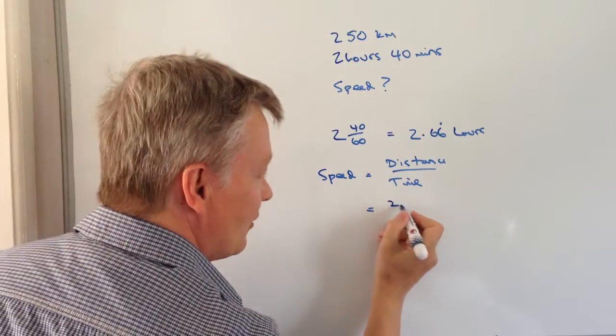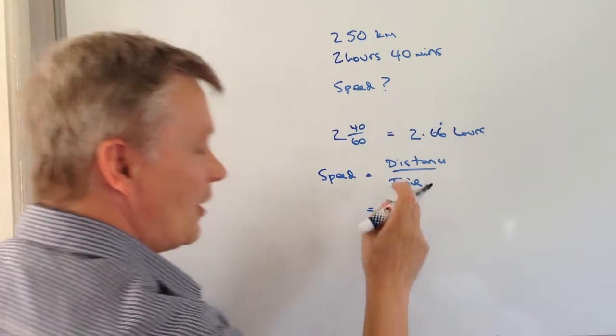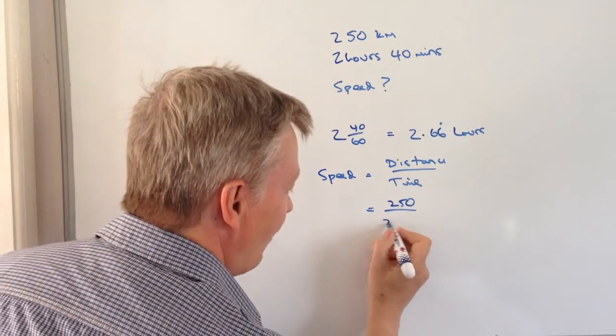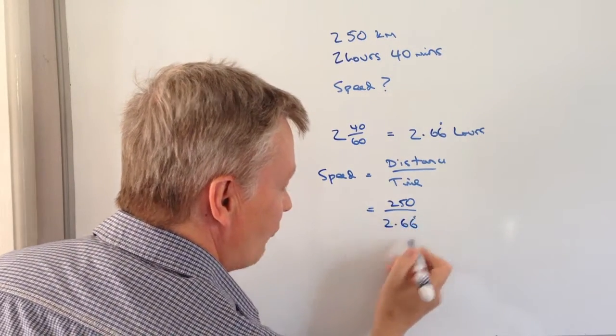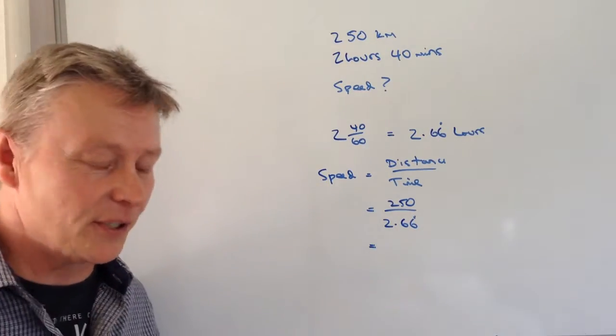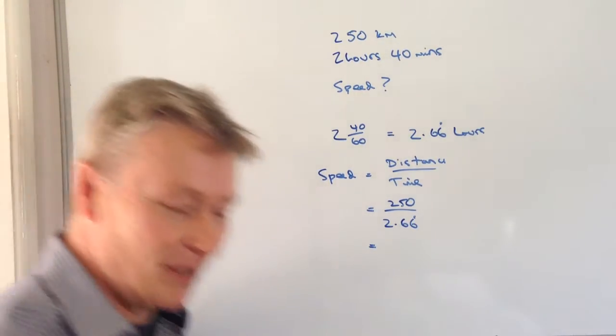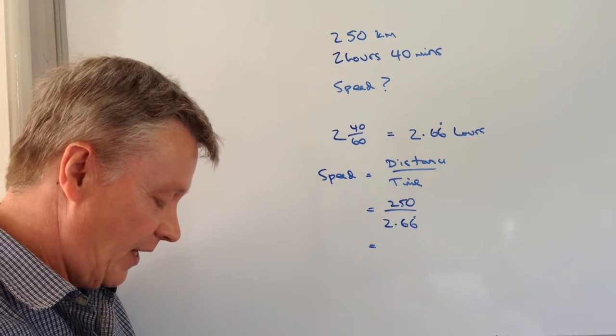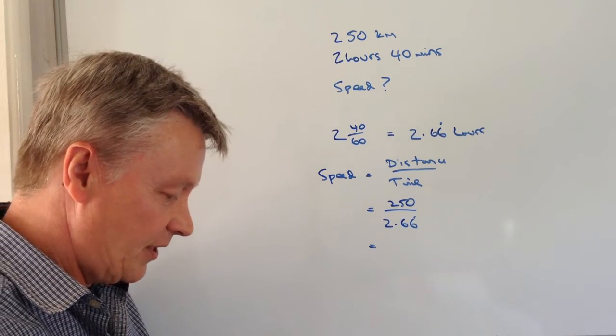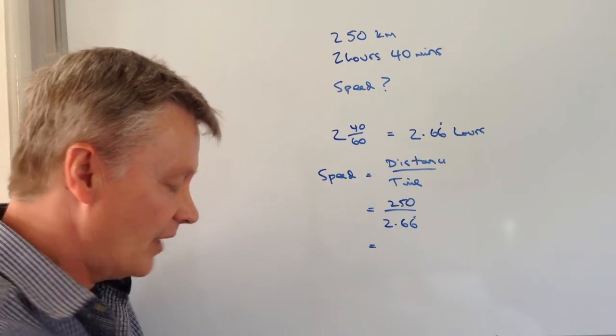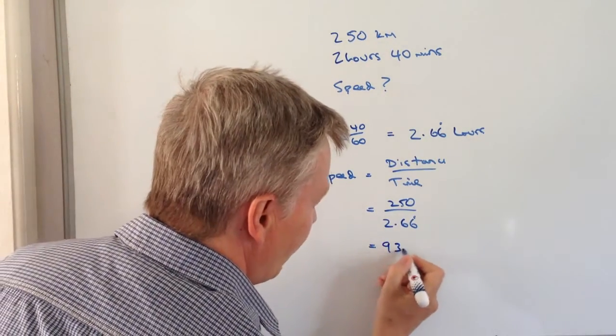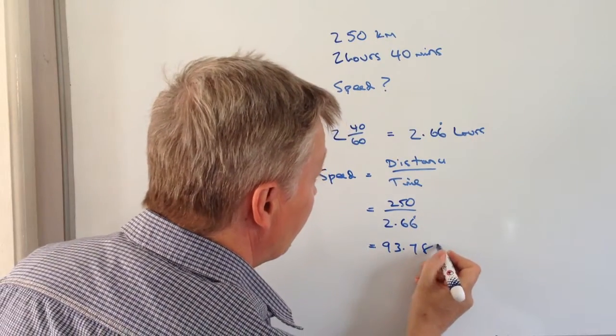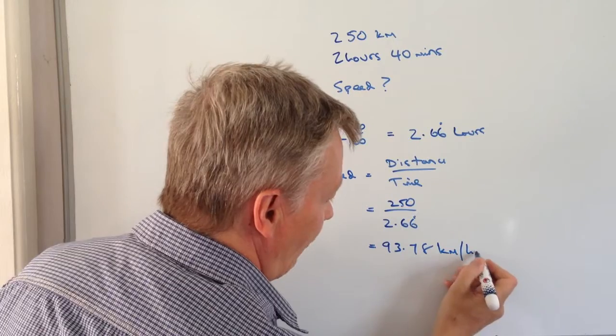So the distance is going to be 250 and then the time is going to be 2.66 recurring hours. And if you pop that into a calculator, I'm just going to reach my calculator, pop that in, you should get 250 divided by 2.66 recurring. And that's going to be 93.78 kilometres per hour.